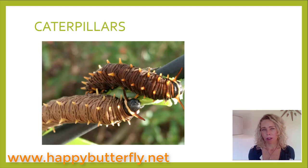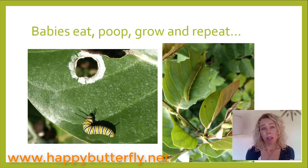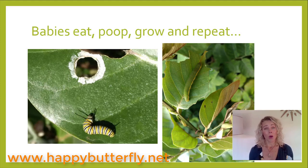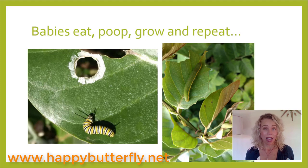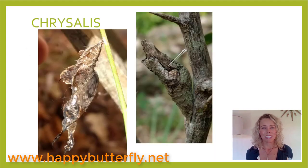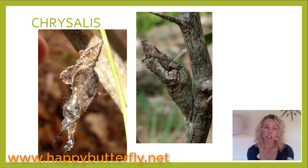Caterpillars are baby butterflies — the juvenile stage of the insect. Their only job is to eat, poop, and grow. They are eating only the plant that their mother put them on, and every species of butterfly has a very limited number of plants it can eat as a caterpillar — some only one kind or plants from one family. After the caterpillar has eaten enough leaves of its host plant, its body will start changing internally and it will be prompted to form a chrysalis.